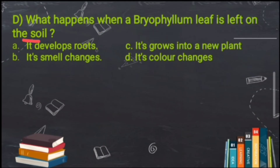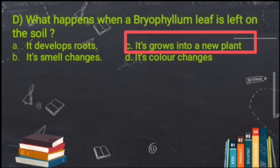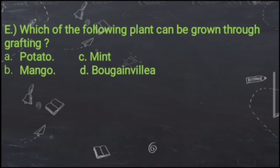Fourth question: What happens when a Bryophyllum leaf is left on the soil? We discussed this — Bryophyllum has a leaf with very small buds on its margins. When these buds fall into the soil and touch it, they develop into a new plant. If you've read the chapter, you'll find the answer easily.